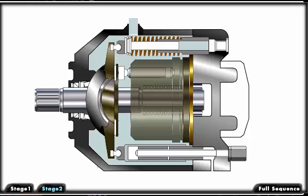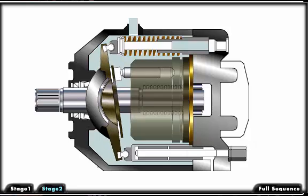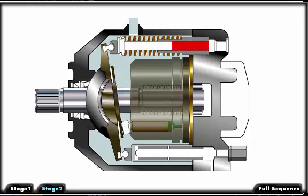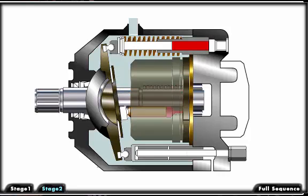With the swash plate vertical, no displacement occurs because there is no reciprocating motion. As the swash plate increases in angle, the piston moves in and out of the barrel as it follows the angle of the swash plate.